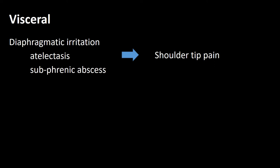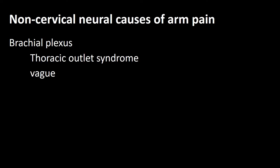The diaphragm may also refer to the shoulder tip, and this may be due to base of lung pathology such as atelectasis or subphrenic abscesses. Arm pain may be due to brachial plexus pathology in patients who do not have a clear single nerve root involved. This should be considered. It may be due to thoracic outlet syndrome, which is a rather vague pathology, with the brachial plexus coming over the first rib, or it may be affected by an additional cervical rib between the scalene muscles.